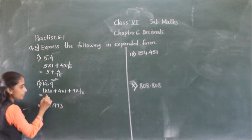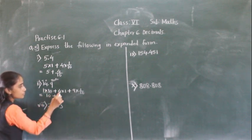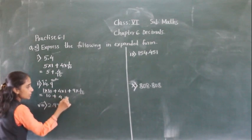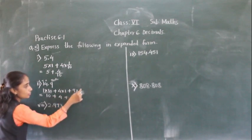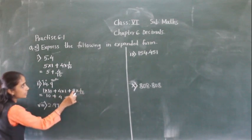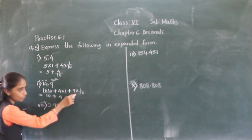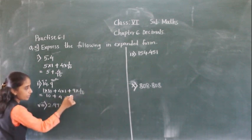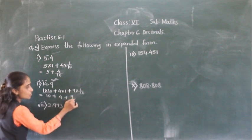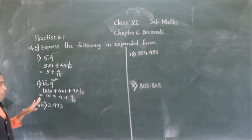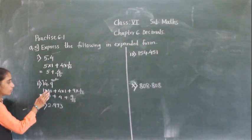So: 10 plus 4 into 1 is 4, plus 9 into 1 upon 10. Now see — here there is no denominator, means 1. So 9 is 9 and 10 is 10. This is the expanded notation that is given.